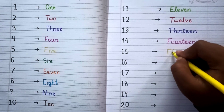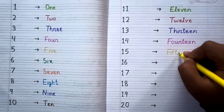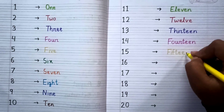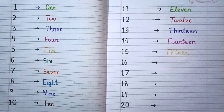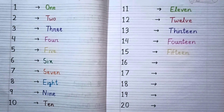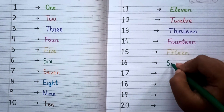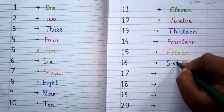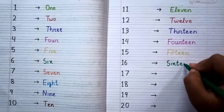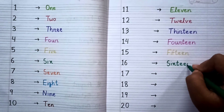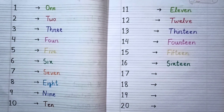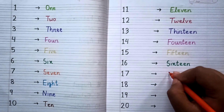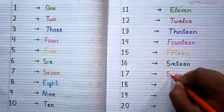After thirteen the next number is fourteen, and after fourteen comes fifteen. The spelling of fifteen is F-I-F-T-E-E-N, fifteen. After fifteen the next number is sixteen, S-I-X-T-E-E-N, sixteen.